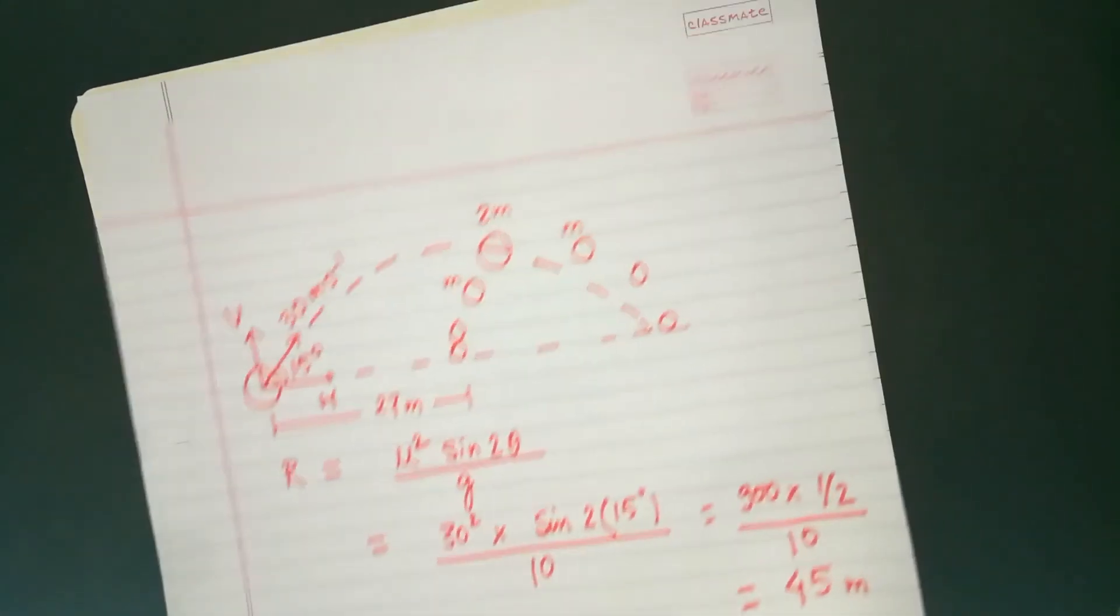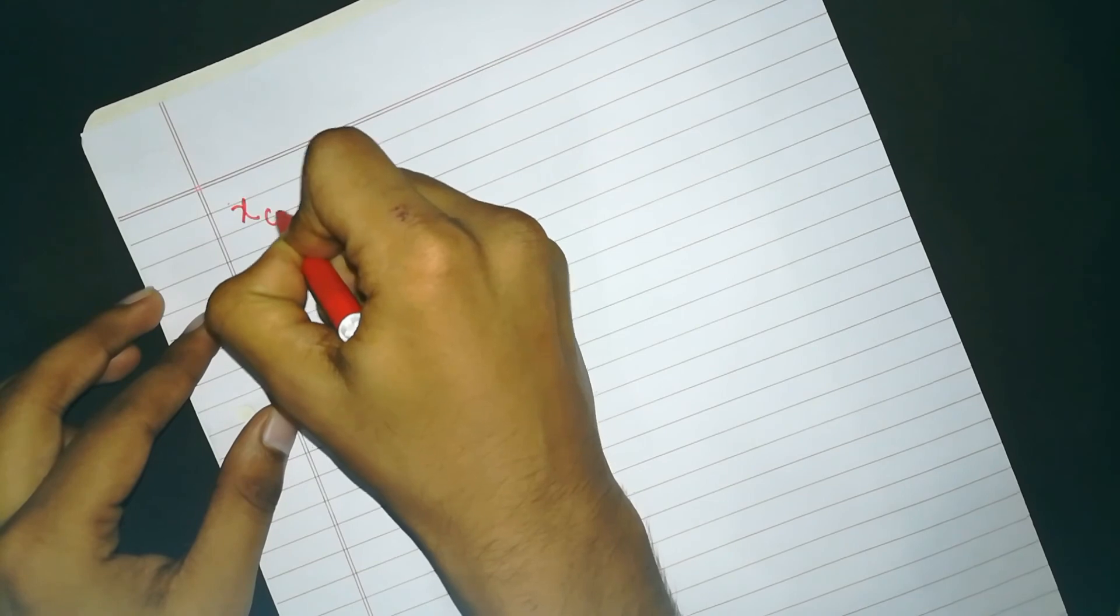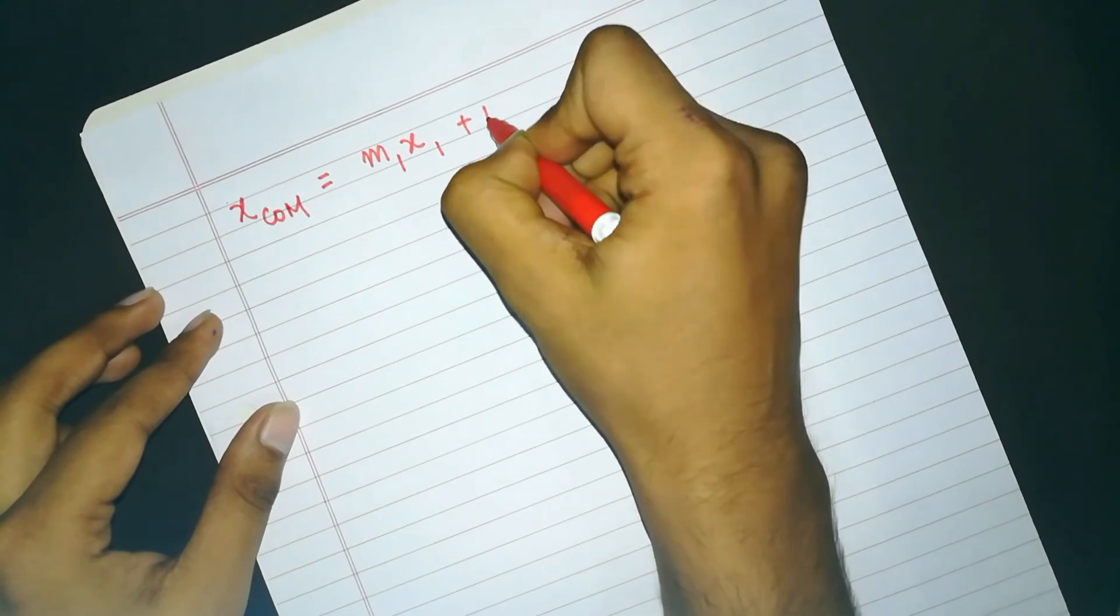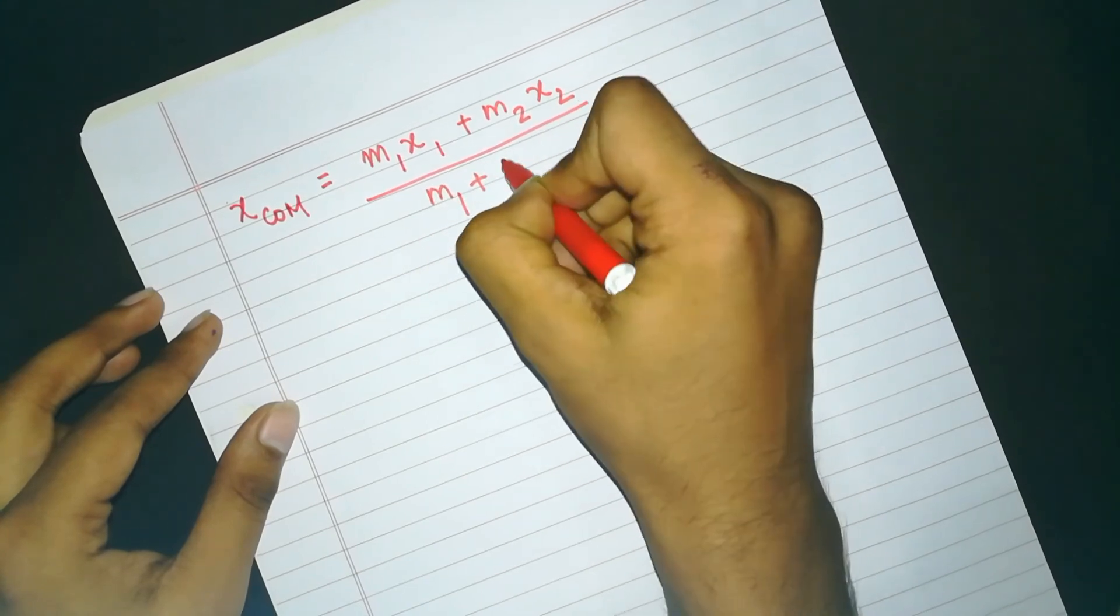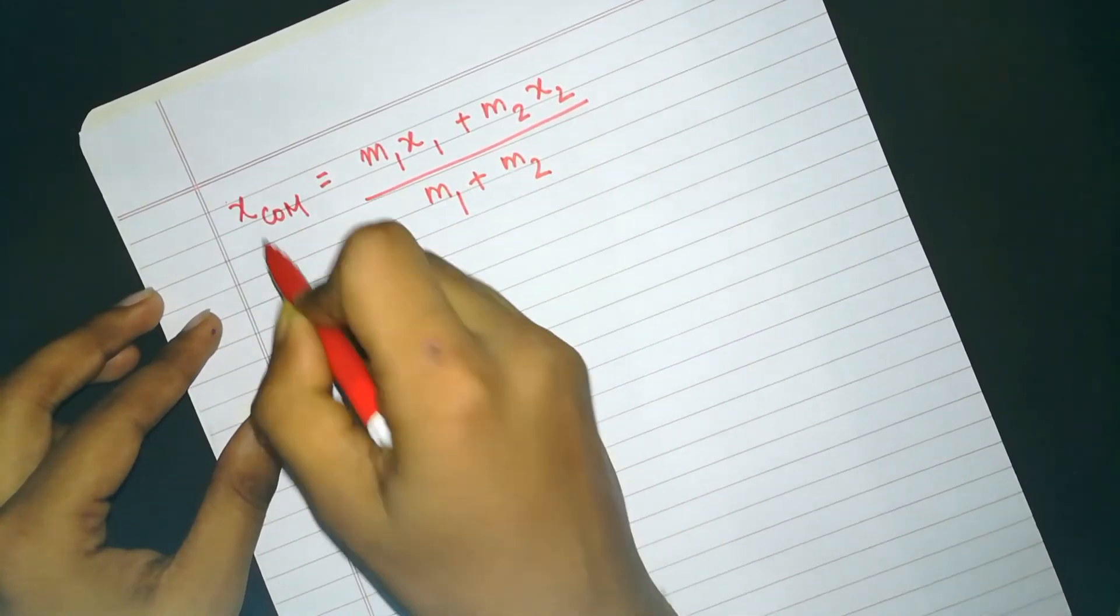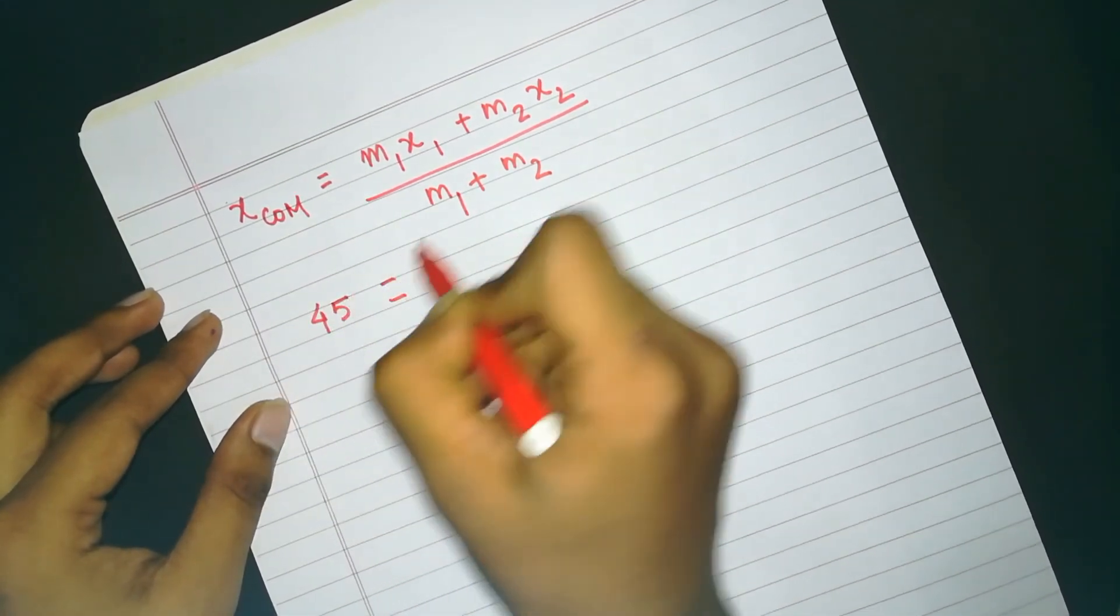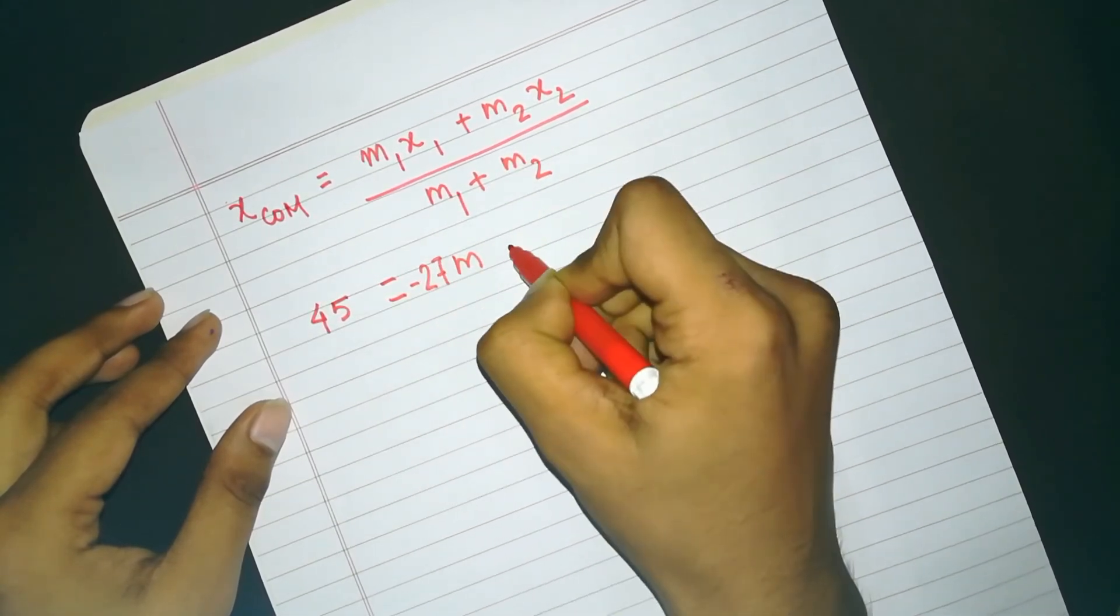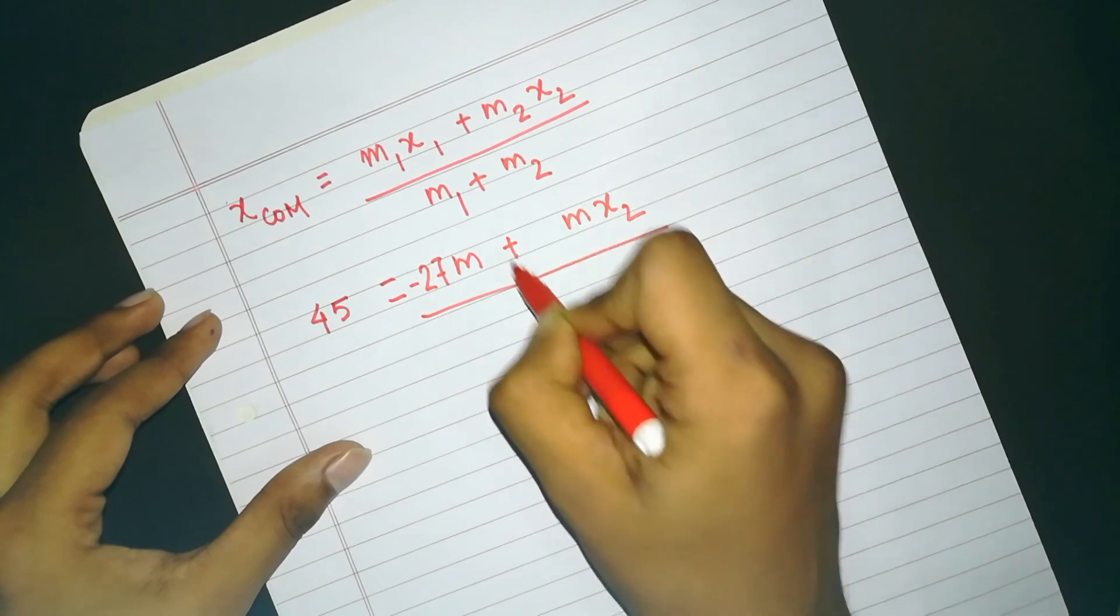That's why, let's calculate the other solution. That is, let's write the formula here again. Now we will again put the value of range here. That is, 45 equals M1 as M as we know, but X1 as minus 27, plus M X2. Again, we will solve for X2 here.